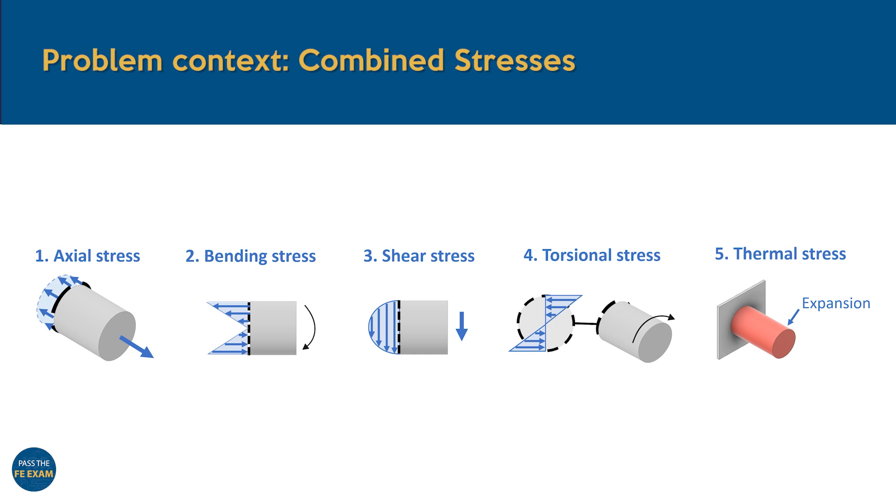This combined stress state occurs when an object experiences different kinds of loads at the same time. For instance, a beam subject to both axial and bending forces will develop a combination of these induced stresses throughout its structure. In general, there are five key stress types you should be familiar with to be able to solve these kinds of problems: axial stress, bending stress, shear stress, torsional stress, and thermal stress.